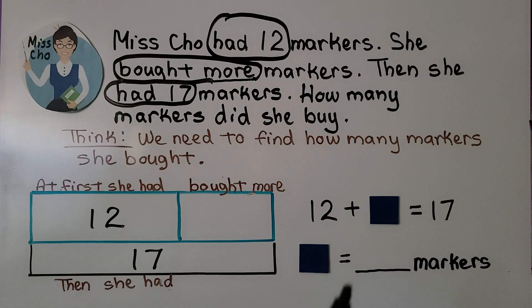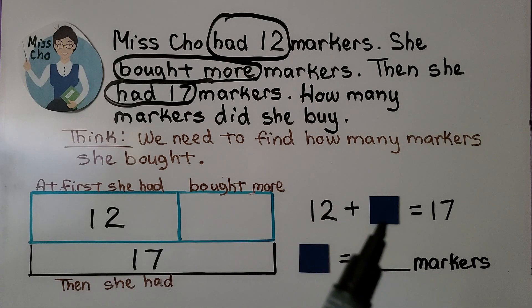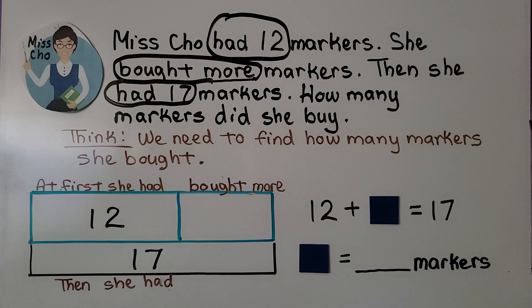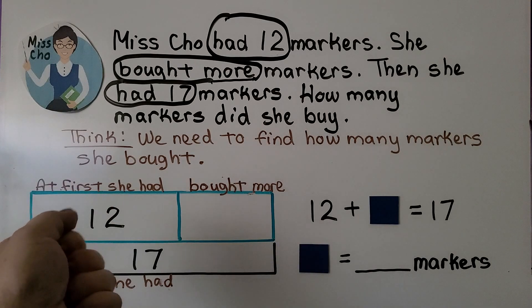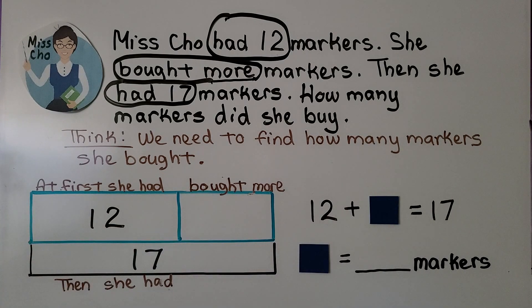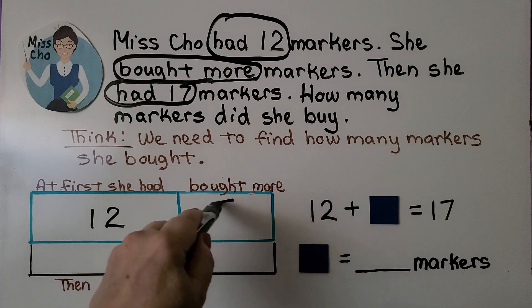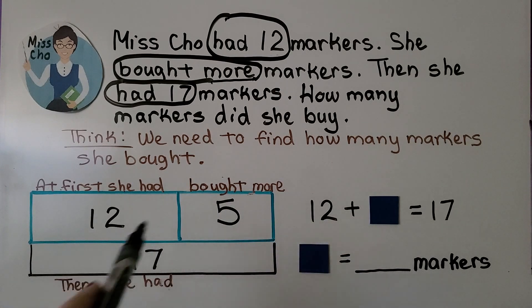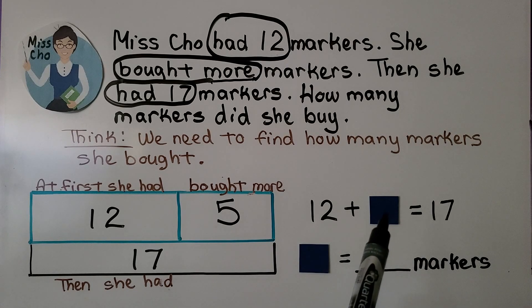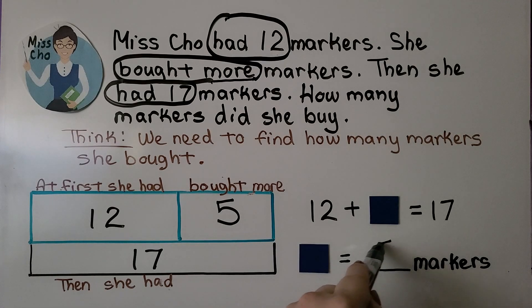We can write an addition sentence. 12 plus some number is equal to 17. We can use a little square or any shape really to take the place of the unknown number. We can start at 12 and count on to 17: 12, 13, 14, 15, 16, 17. That's 5. That means she bought 5 more. This little square is equal to 5 for 5 markers.